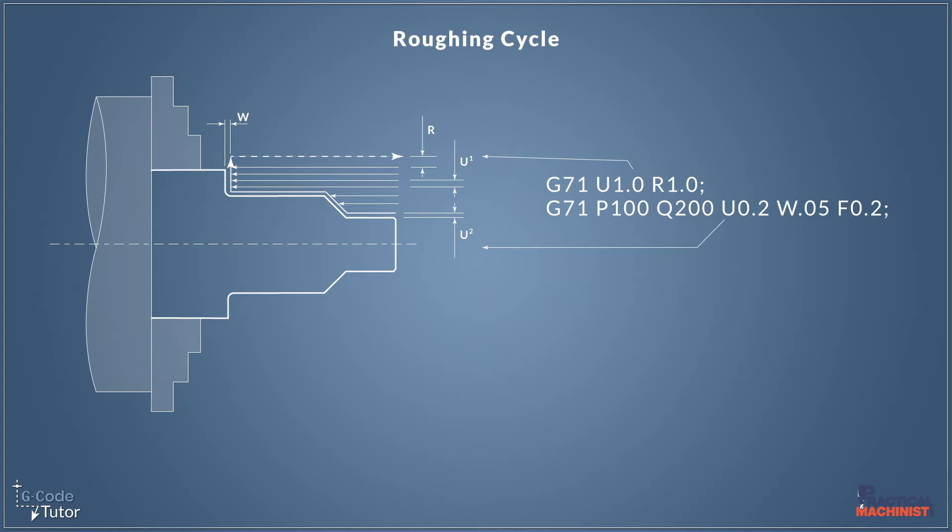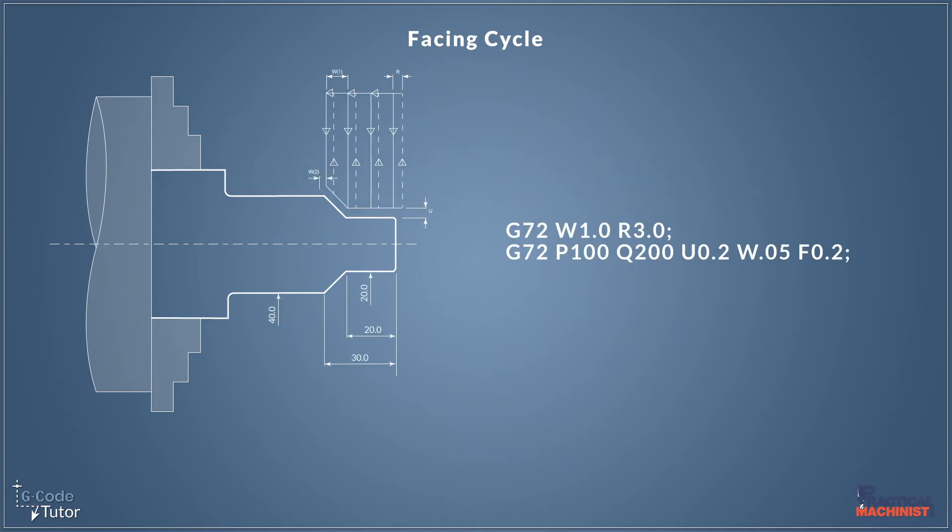The G71 removes material along the Z axis while indexing down in X, taking cuts in X, but the tool is traveling along the Z axis removing material. There's a lot to this. We can have a one-line roughing cycle or a two-line G71 roughing cycle, depending on our machine. This is our main roughing cycle, the G71, and it works very similar to the G72.